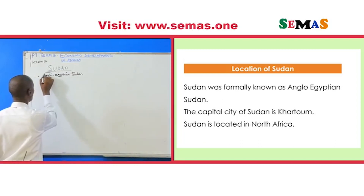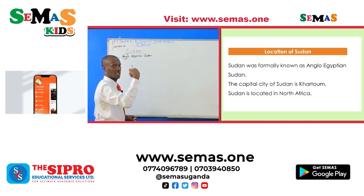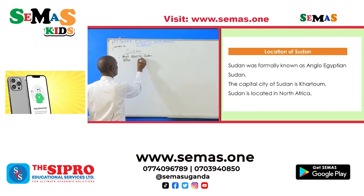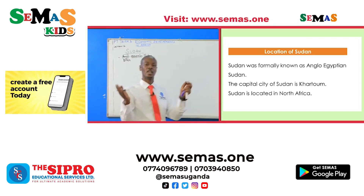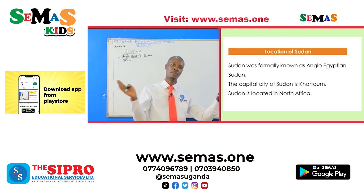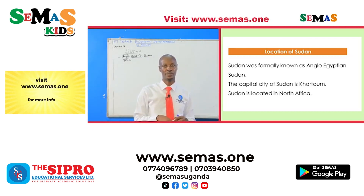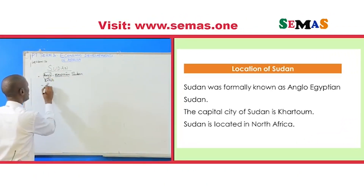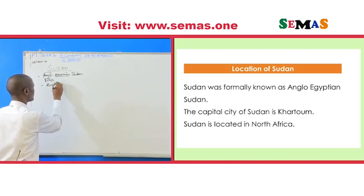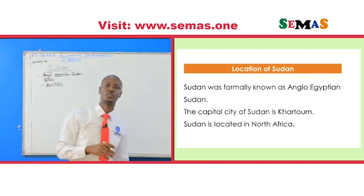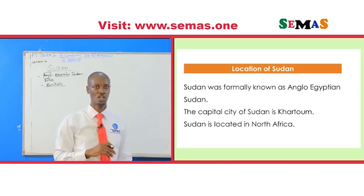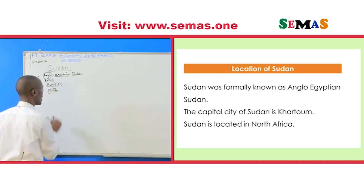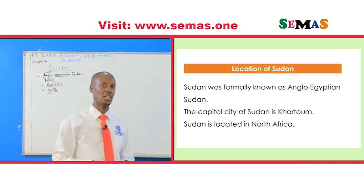What do we mean by Anglo? Anglo comes from the word English, meaning something to do with the British. Then Egyptian, meaning it was a country that was ruled by both the British and the Egyptians. This Anglo-Egyptian Sudan was colonized by the British. Therefore, we can say it uses English because it's a British colony. In 1956, this country got her independence.